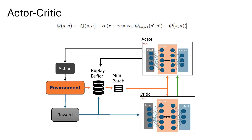Let's see again here the structure of the Actor and Critic: the two neural networks, the replay buffer, the action, the environment, the reward, and the Q-Value function.